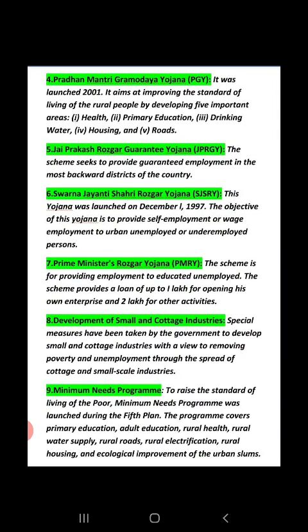The ninth is the Minimum Needs Program. During the 5th Plan, the minimum needs launched include: primary education, adult education, rural health, rural water supply, rural roads, rural electrification, rural housing, and ecological improvement of urban slums. All these points were considered and work was carried out on them.